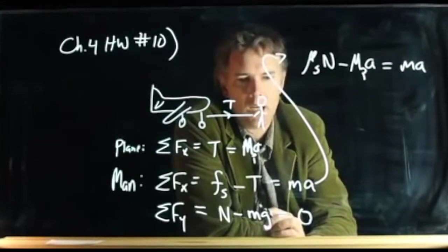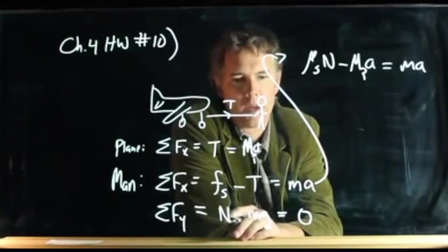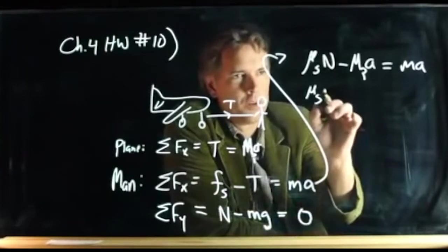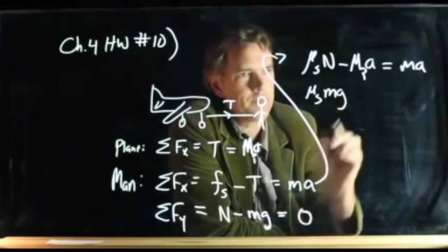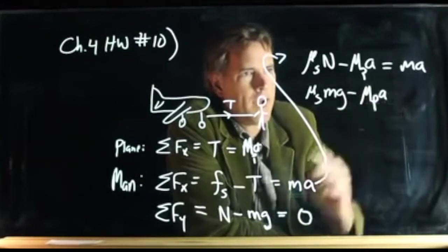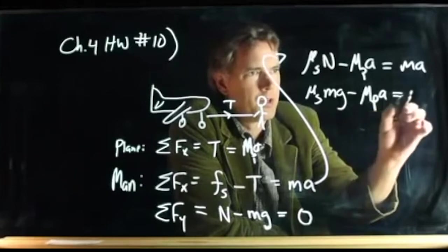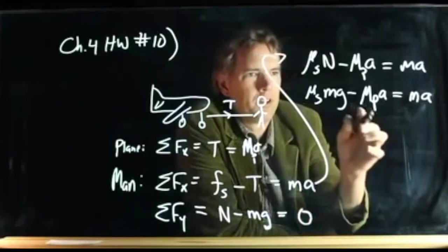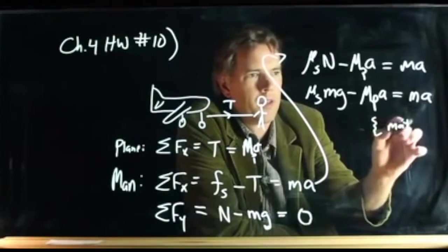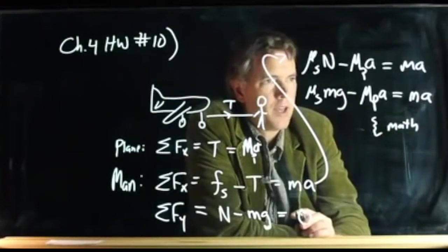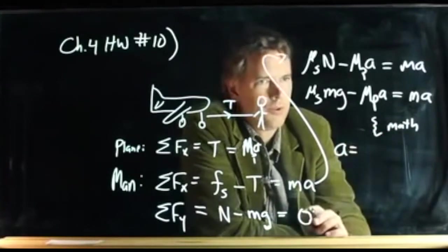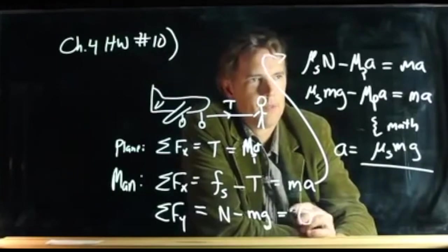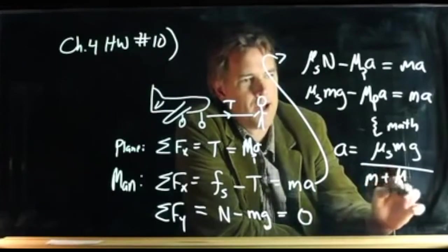We need the normal force on the man. Mu_s times the normal force on the man — from the last equation — is just equal to m times g. So: mu_s times mg, minus mass of the plane times acceleration, equals mass of the man times acceleration. Doing a little bit of math, I find that A equals mu_s times m times g, all over M plus mass of the plane.